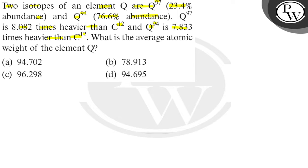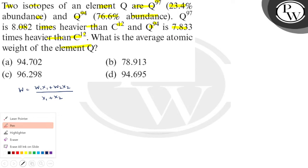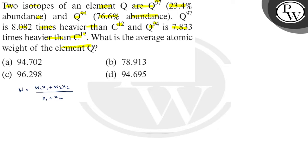Here we have the formula for average atomic weight: (W1·X1 + W2·X2) / (X1 + X2).